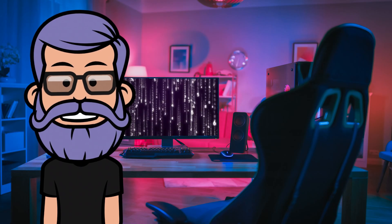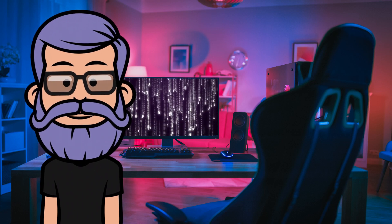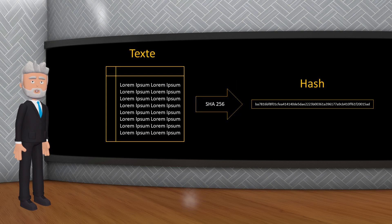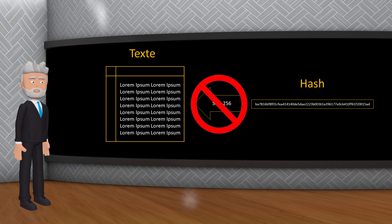Alors, ces fameuses fonctions de hachage, c'est quoi ça encore ? Les fonctions de hachage sont des algorithmes qui transforment une quantité arbitraire de données en une chaîne de caractères de longueur fixe, appelée hash. Ces fonctions sont conçues pour être unidirectionnelles, c'est-à-dire qu'il est difficile, voire impossible, de trouver les données d'origine à partir du hash.